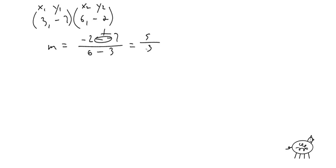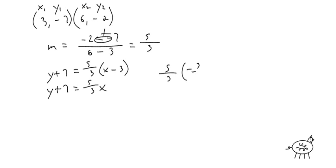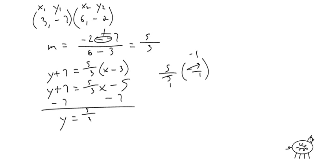Let's plug it in. It doesn't matter which point you use — pick the smaller numbers. I'm going to use the first point and say y plus seven — opposite of negative seven — equals five thirds times (x minus three). So y plus seven equals five thirds x. Five thirds times three over one is a one, and it's negative one, so it's minus five. Subtract seven from both sides: y equals five thirds x minus 12.